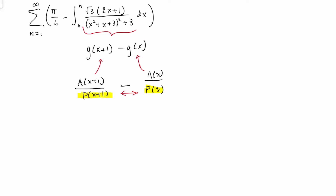Moreover, if their product is a degree 4 polynomial, then they must each be degree 2. Notice the degrees both have to be the same anyway, because replacing x with x plus 1 doesn't change the degree. So they're degree 2. And in fact, if they're degree 2 and they multiply to that original denominator, then they must have a leading coefficient of 1. So that means we've actually stumbled upon a form for p of x - p of x must be of this form. That means this thing must be x plus 1 all squared, plus a times x plus 1, plus b - that's just replacing all the x's in p of x with x plus 1.